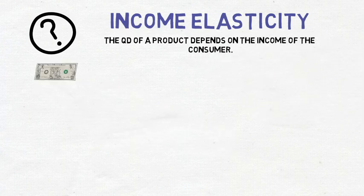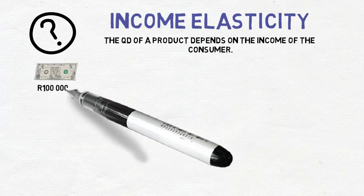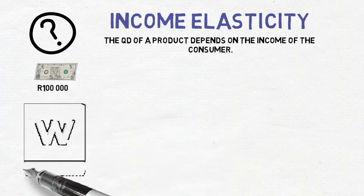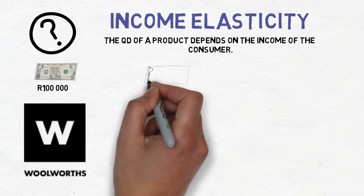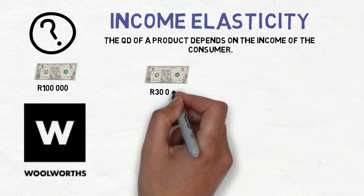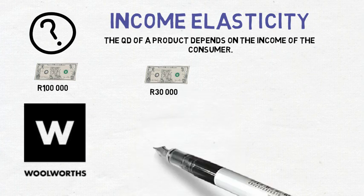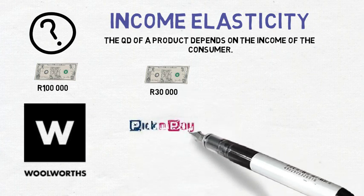For example, if you earn a hundred thousand rand a month you are more likely to shop at Woolworths for food. You can afford to buy more expensive products. If you earn thirty thousand rand a month you are more likely to shop at Pick and Pay for food.